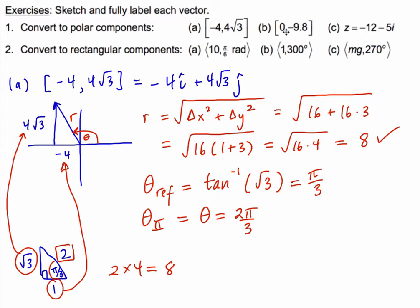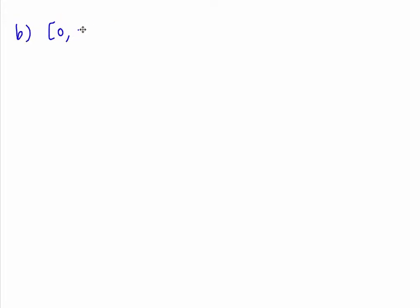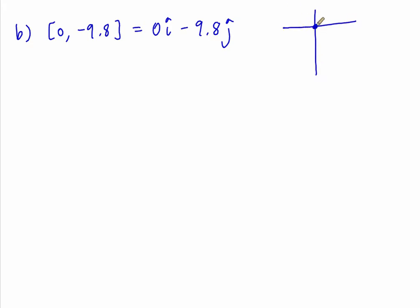The next case: we have a vector with delta x equal to zero and delta y equal to negative 9.8. Writing it in standard vector format emphasizes these are rectangular components. Sketched in standard position this vector goes straight down, giving us an angle of three pi by two and a magnitude of 9.8. So we get 9.8 for the magnitude and 270 degrees or three pi by two radians for the direction.